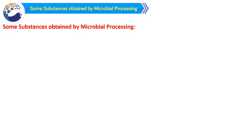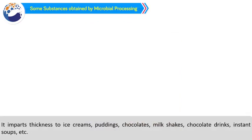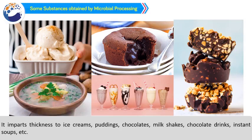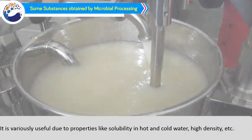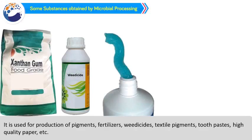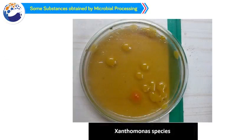Some substances are obtained by microbial processing. One among them is xanthan gum. Role: A. It imparts thickness to ice creams, puddings, chocolates, milkshakes, chocolate drinks, instant soups, etc. B. It is variously useful due to properties like solubility in hot and cold water, high density, etc. C. It is used for production of pigments, fertilizers, herbicides, textile pigments, toothpaste, high quality paper, etc. Microbe used in its production: This gum is obtained by fermentation of starch and molasses with the help of Xanthomonas species.